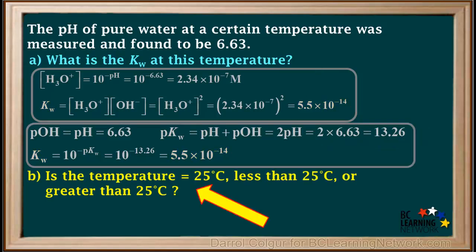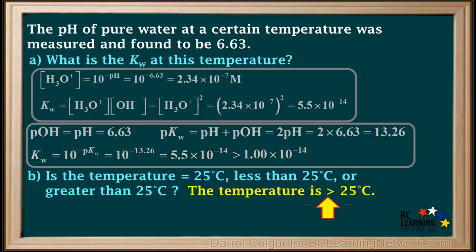Question B asks whether the temperature is equal to, less than, or greater than 25 degrees. We see that the Kw for water at this temperature is 5.5 times 10 to the negative 14th, which is greater than the Kw at 25 degrees, or 1 times 10 to the negative 14th. When the Kw is greater than 1 times 10 to the negative 14th, it means that the ionization equilibrium has shifted to the right. So the temperature must be higher than 25 degrees.